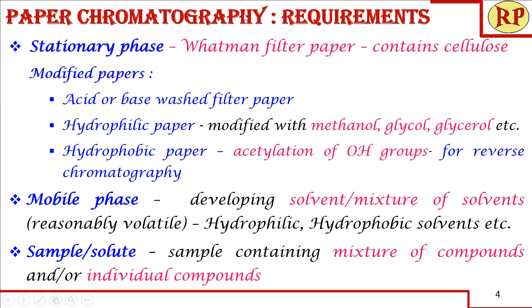We will see the requirements for this technique. First is the stationary phase. We generally use Whatman filter paper, which is majorly made of cellulose. We can also use modified papers like acid or base washed filter paper, hydrophilic papers, or hydrophobic papers. Next comes the mobile phase, where we use a developing solvent. It can be a single solvent, or if you are unable to separate with a single solvent, we can use a mixture of solvents. The solvent should be reasonably volatile and can be hydrophilic or hydrophobic in nature.